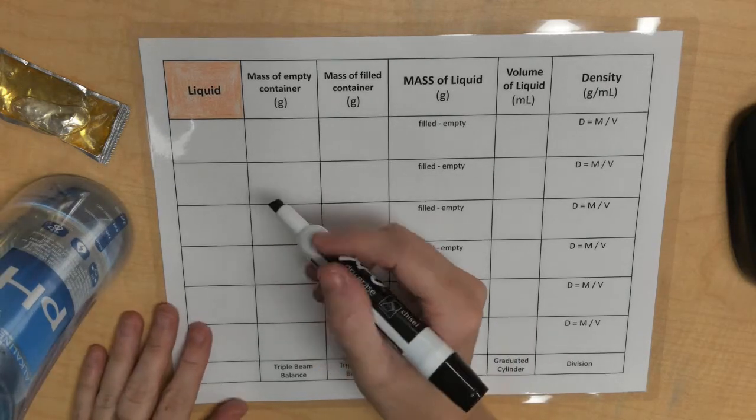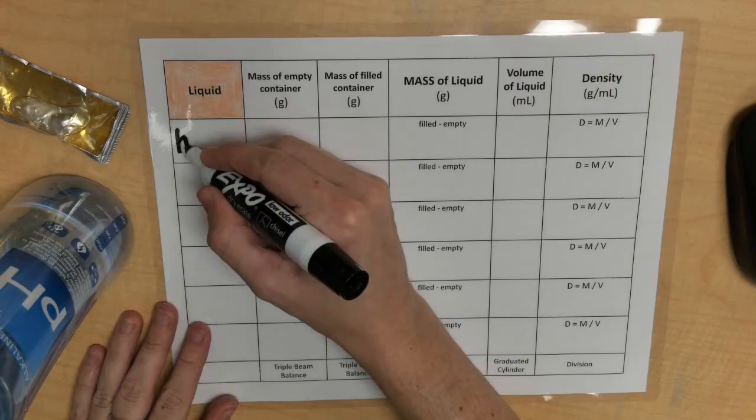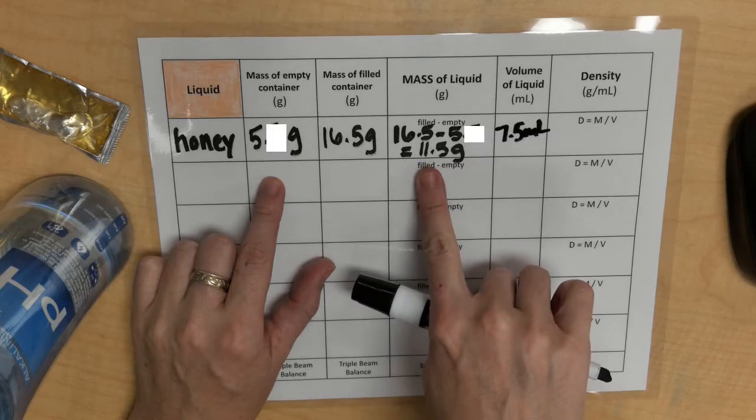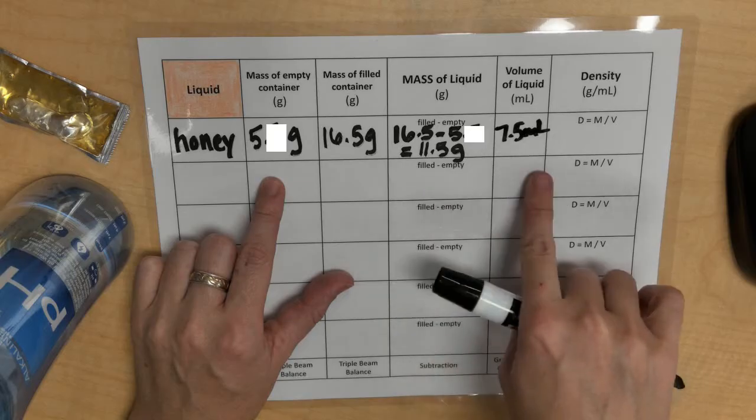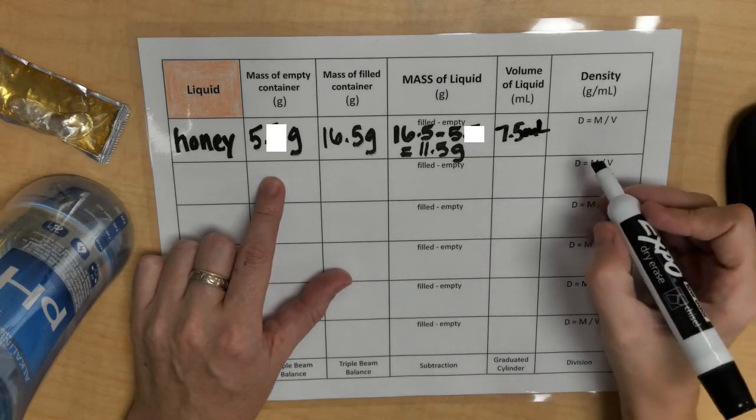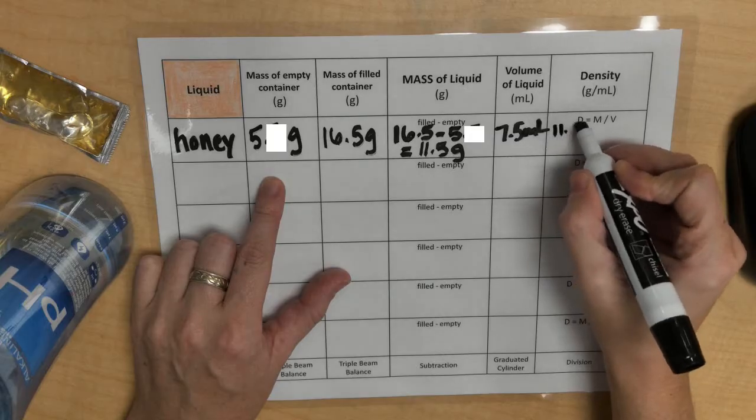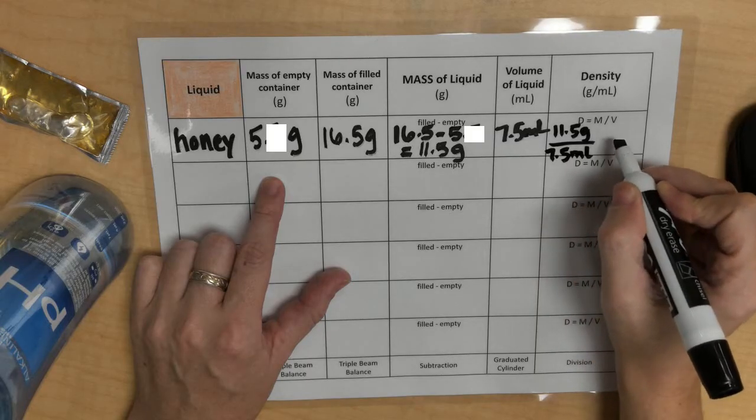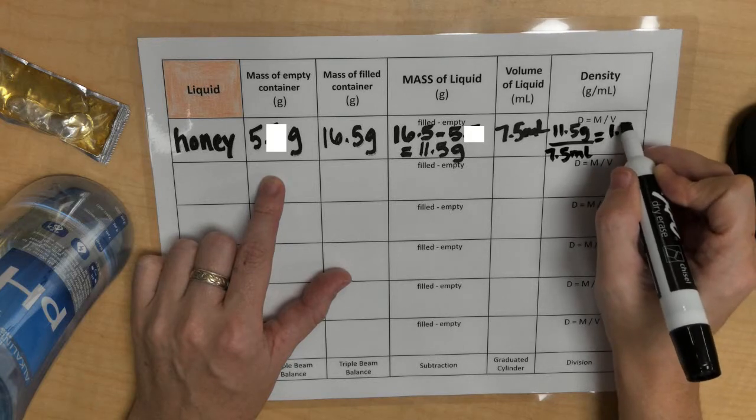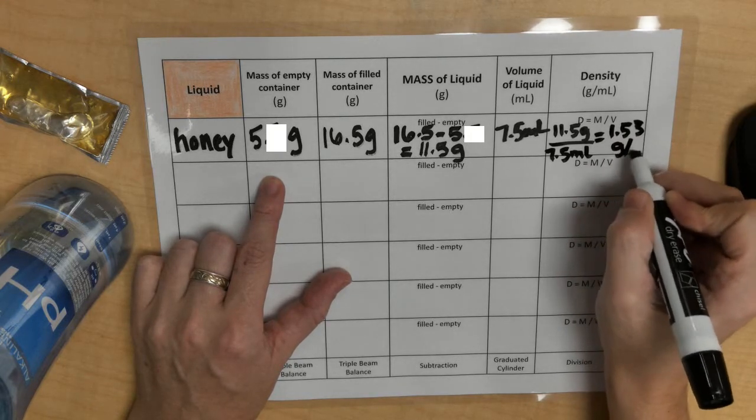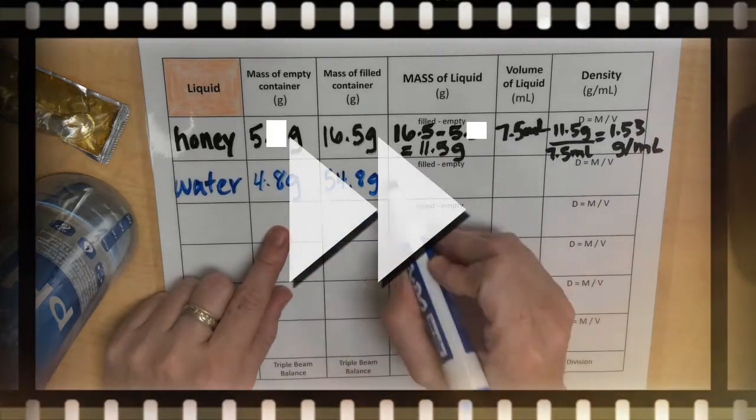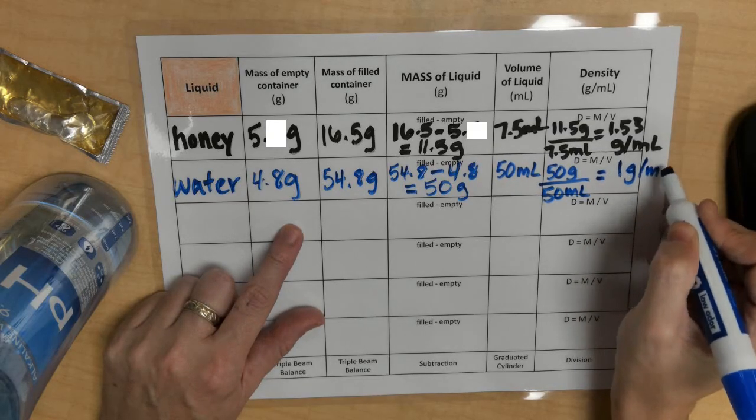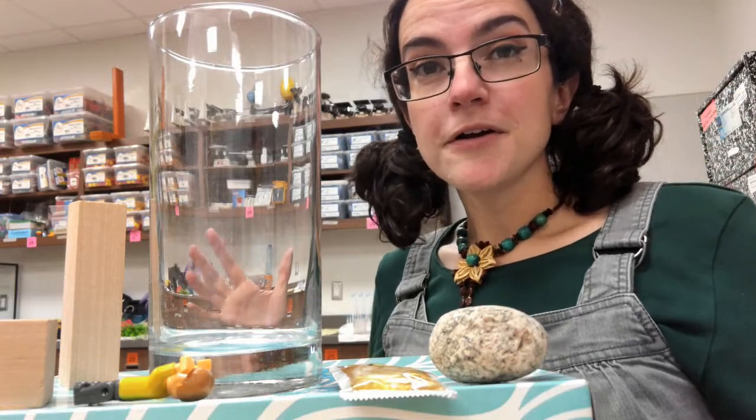Okay, so when measuring for the mass and the volume of my honey, so I have my mass and my volume, and I just input those two numbers into my formula. So it would look like 11.5 grams divided by 7.5 milliliters. And that would give me a density of 1.53 grams per milliliter. And that would give me a density of 1 gram per milliliter for my water.